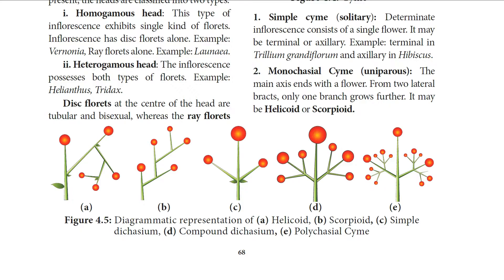Simple cyme has a determinate inflorescence axis consisting of a single flower; it may be either terminal or axillary. Terminal example: Trillium grandiflorum. Axillary example: Hibiscus. The next type is monochasial cyme.